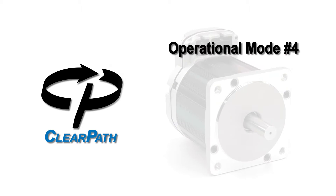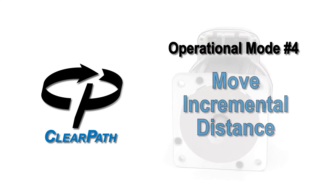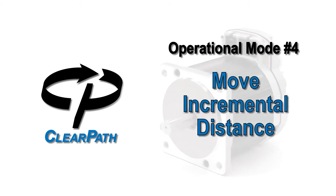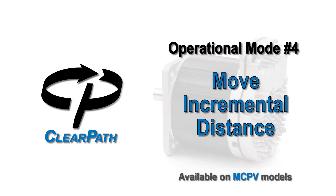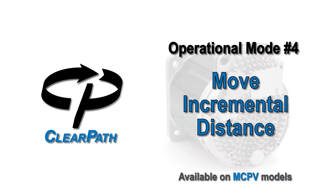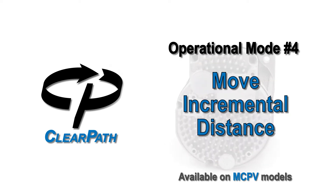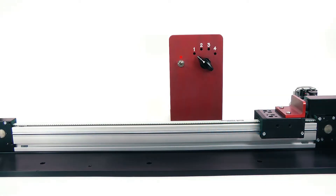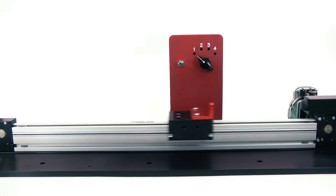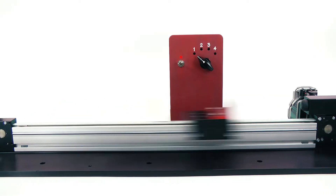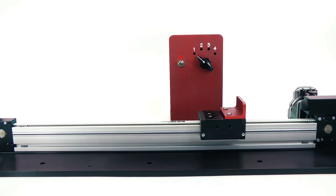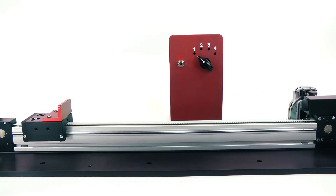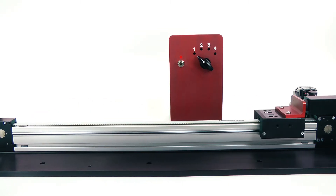ClearPath Operational Mode 4: Move Incremental Distance. Move Incremental Distance is the mode to use when you need to position to many locations that are integer multiples of each other, like with indexing tables.